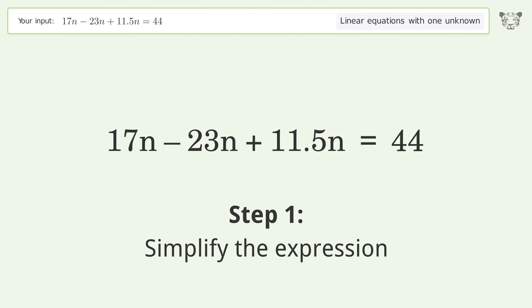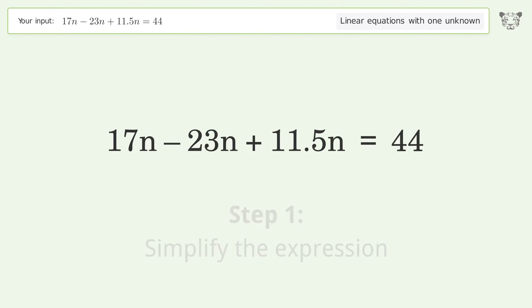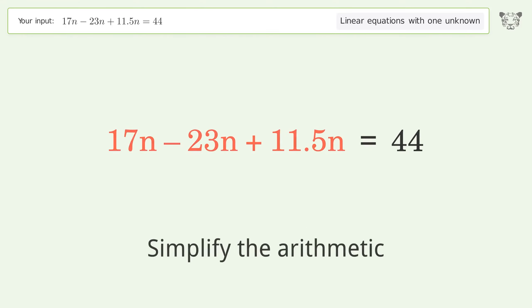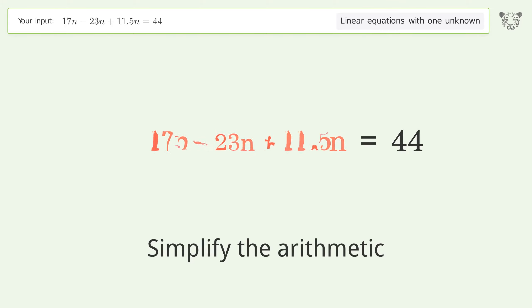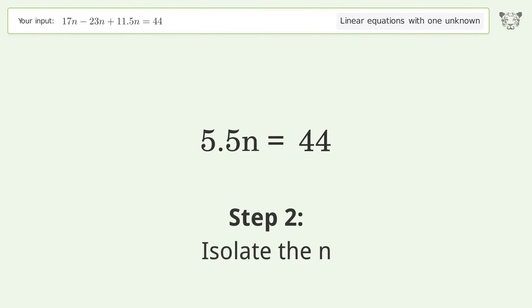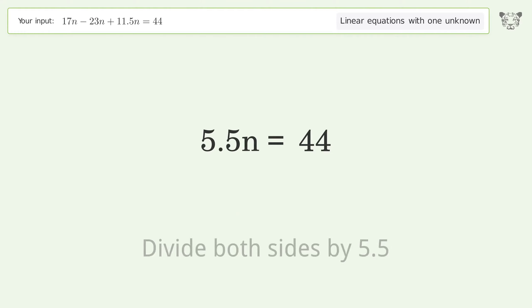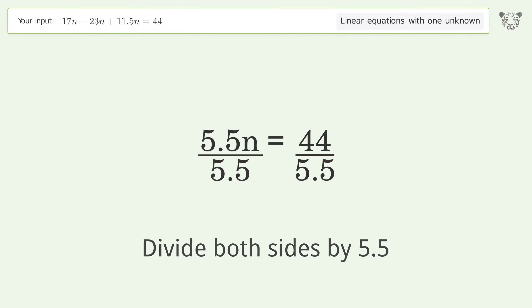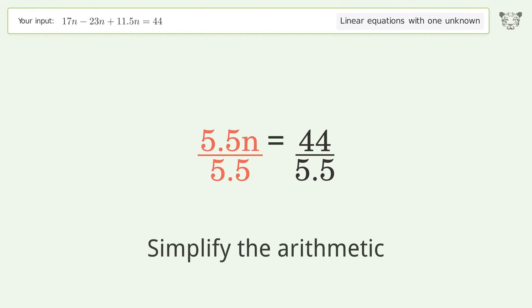Simplify the expression and simplify the arithmetic. Next, isolate the n by dividing both sides by 5.5. Then simplify the arithmetic again.